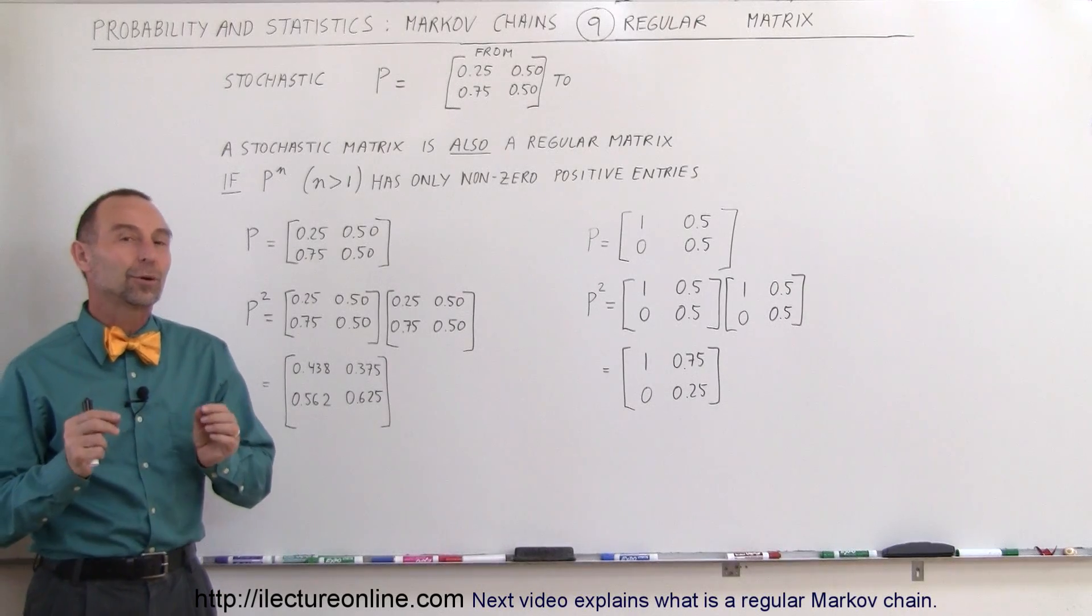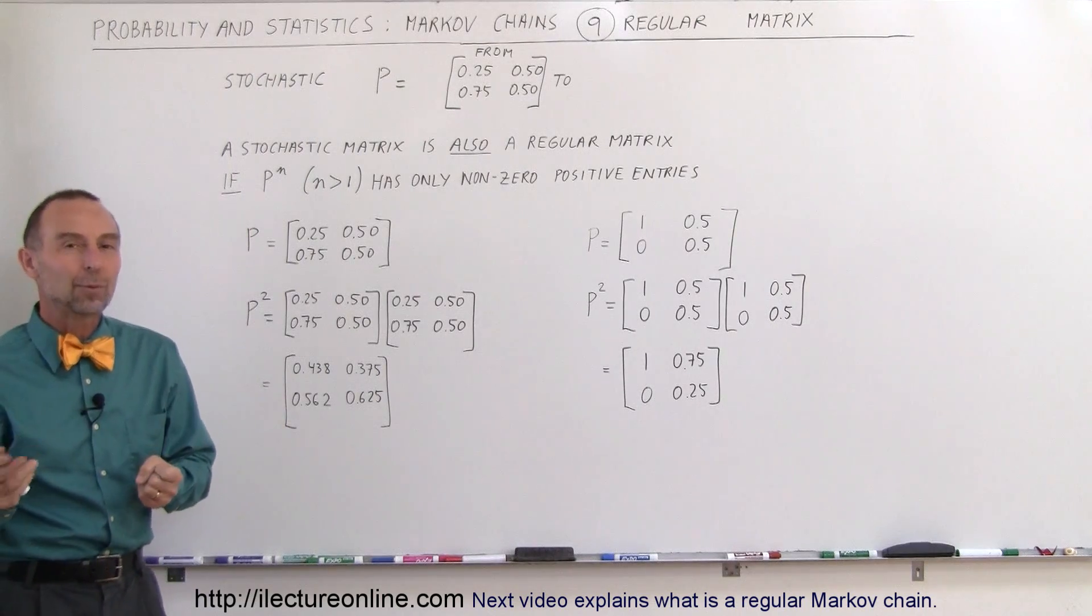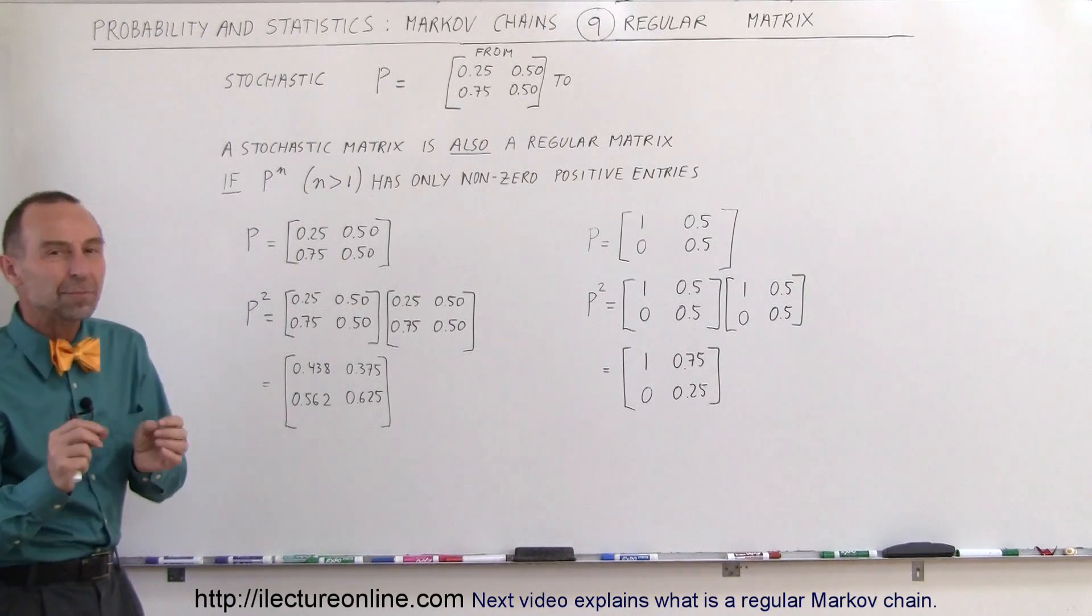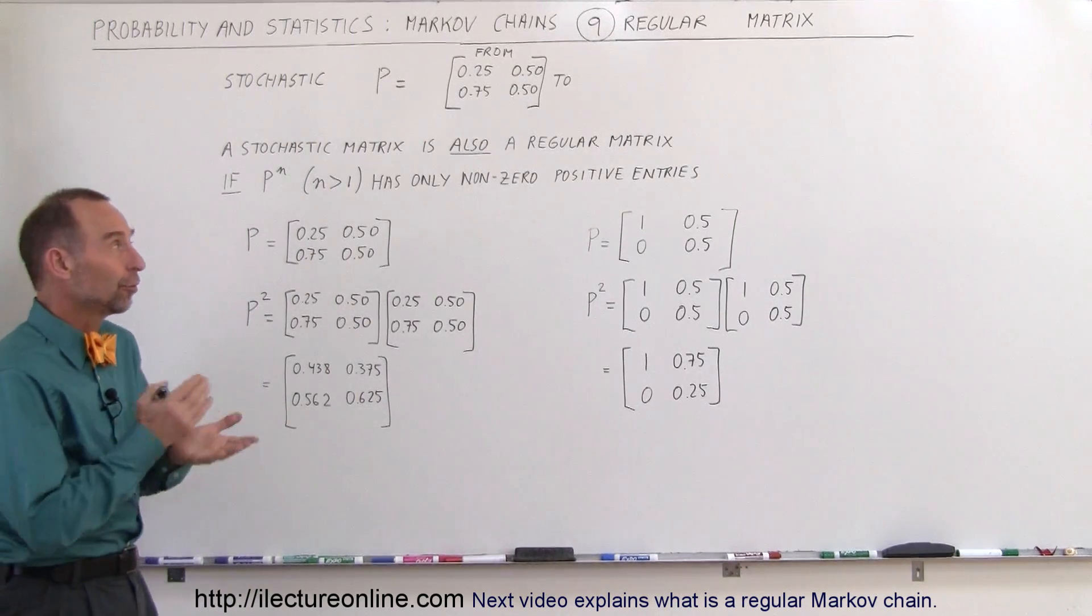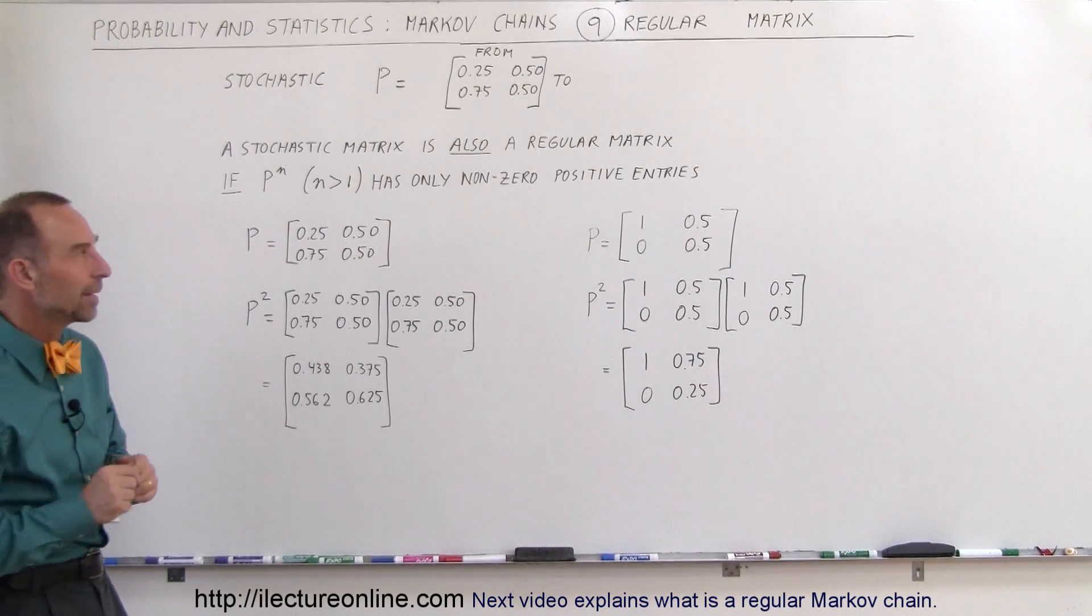Welcome to ElectronLine. In this video we're going to take a look at the second property that matrices need to have when we're doing Markov chains, which is it needs to be a regular matrix. So first of all it needs to be a stochastic matrix and it also needs to be a regular matrix.